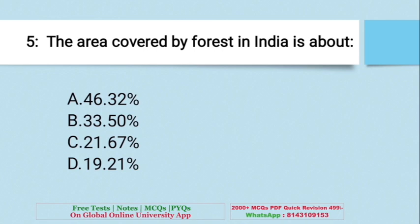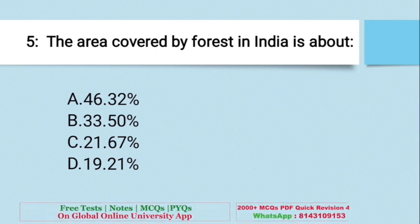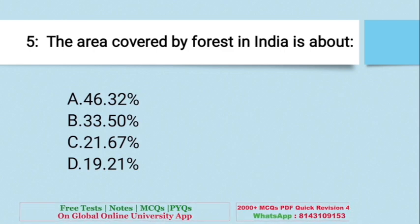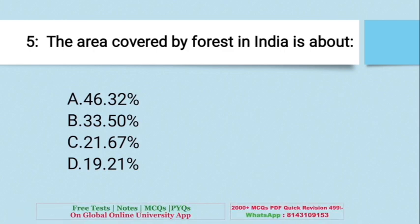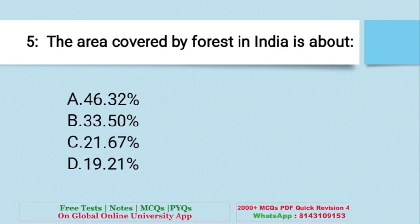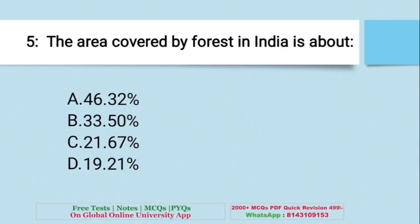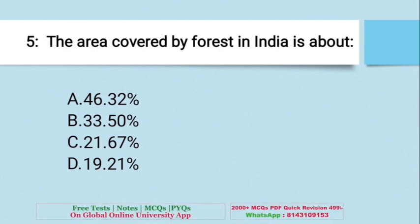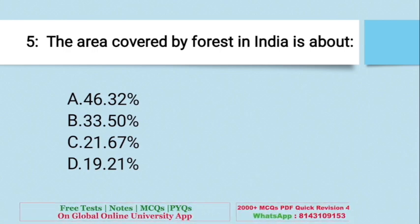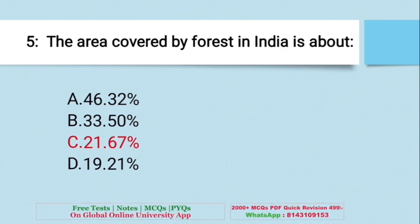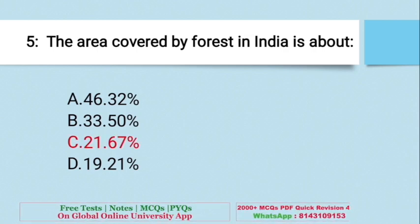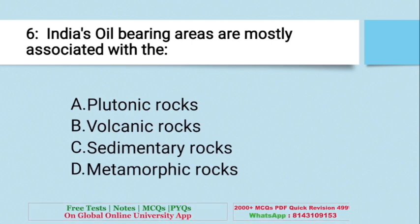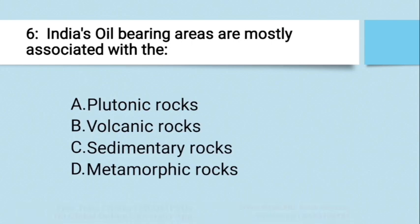Question: The area covered by forest in India is about — A. 46.32%, B. 33.50%, C. 21.67%, D. 19.21%. The right answer is C — 21.67%.